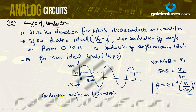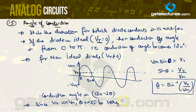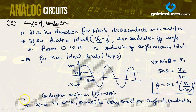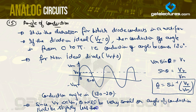Since Vγ is much less than Vm, θ will be very small. Vγ is on the order of 0.7V for silicon and 0.3V for germanium, as we studied in electron devices and circuits. Therefore, the angle of conduction will be slightly less than 180 degrees.